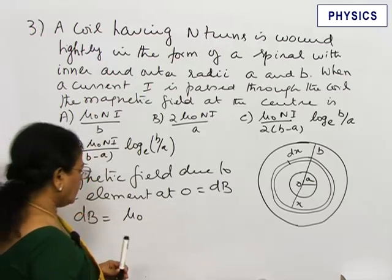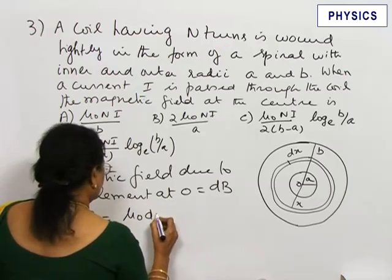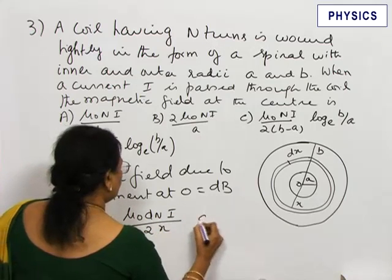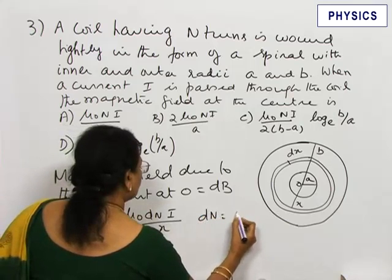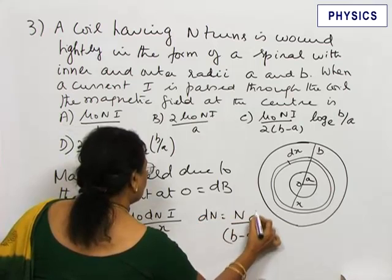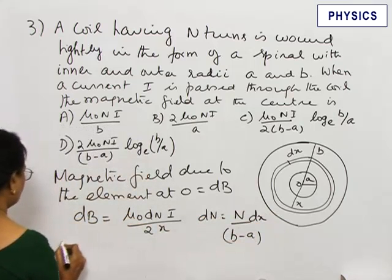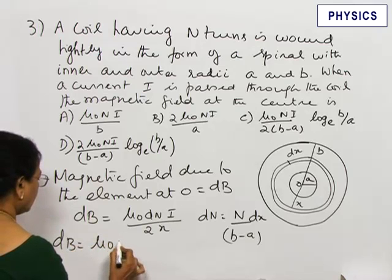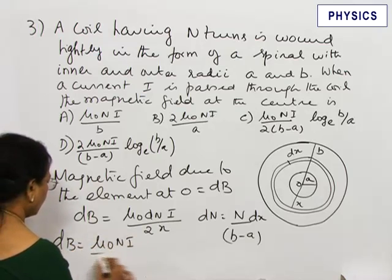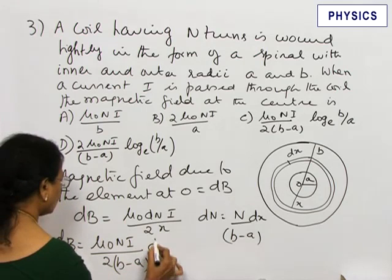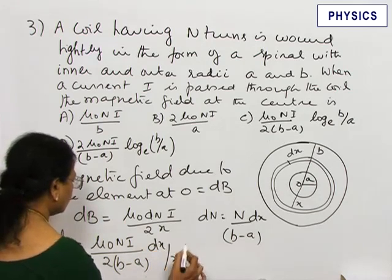I can write dn as dn i by 2x, where dn equals n by B minus A dx. So dB equals mu naught n i by 2 B minus A dx by x.